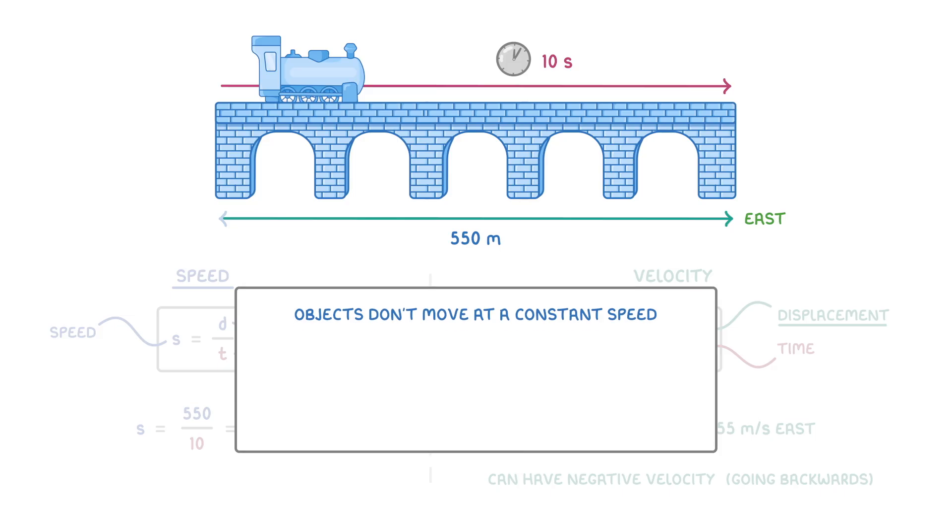Now often objects don't actually move at a constant speed, but instead vary along their journey. We can still use this equation, but we need to divide the total distance or displacement by the total time that the journey took. And the value that we calculate will then be the average speed, or average velocity.